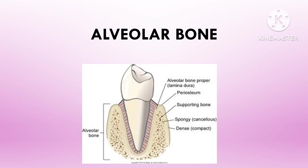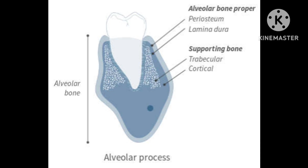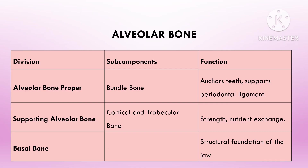Number one is the alveolar bone proper, also known as bundle bone. Number two is the supporting alveolar bone, which is made up of cortical bone and cancellous bone. The third division is the basal bone, which is the part of the jaw bone that lies beneath the alveolar process. It does not support the teeth directly; however, it forms a foundation for the alveolar process.